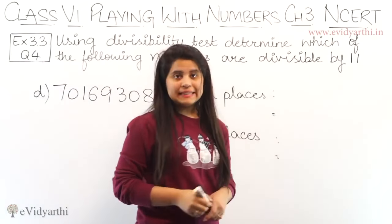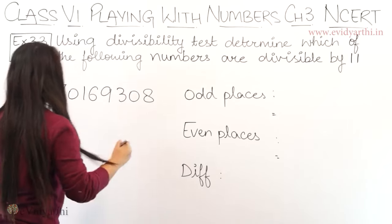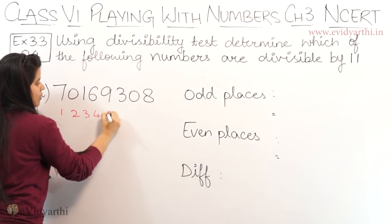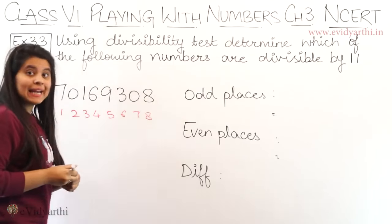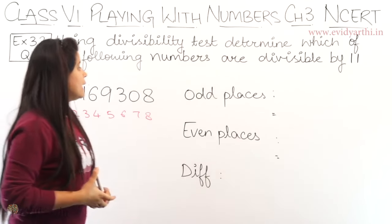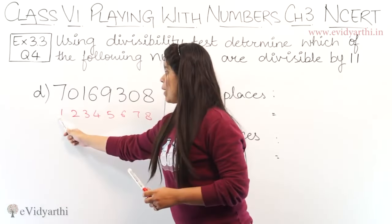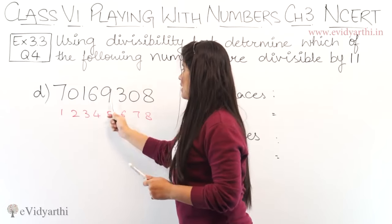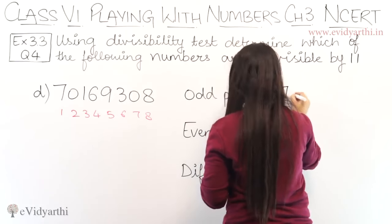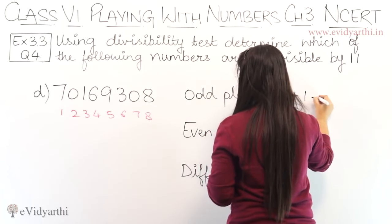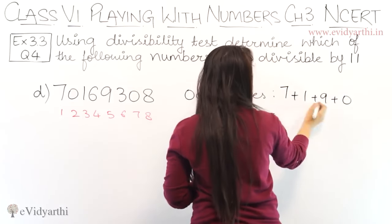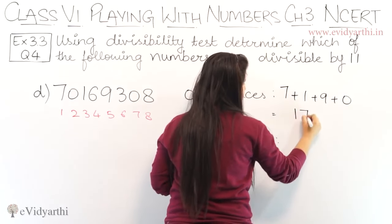Coming to the D part. First, we will mark the positions: 1, 2, 3, 4, 5, 6, 7, 8. Here we have an 8-digit number. Now, the digits at odd places — positions 1, 3, 5, and 7 — are 7, 1, 9, and 0. Adding them: 9 plus 1 is 10, plus 7 is 17. So the sum of odd place digits is 17.